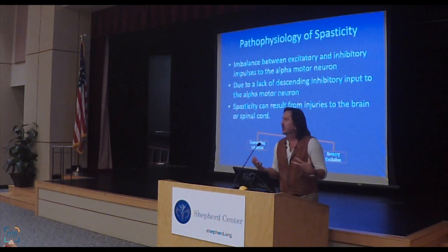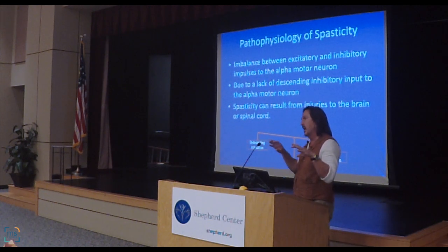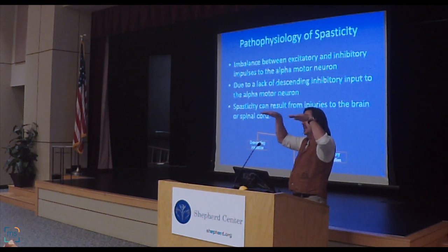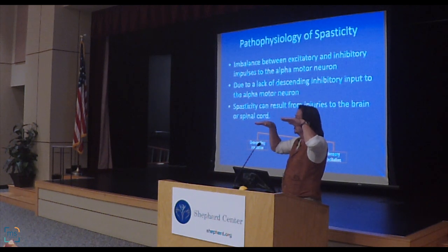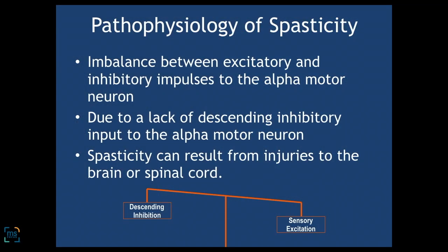Everything as it relates to muscle tone in the human body is a balance between excitatory influences and inhibitory stimuli. This translates to a balance between muscles that want to extend and muscles that want to flex. If you leave the spinal cord to its own devices, it has certain things it wants your muscles to do — typically it wants your legs to stiffen out and your arms to flex. The brain comes into play and has inhibitory influences over those, toning them down.